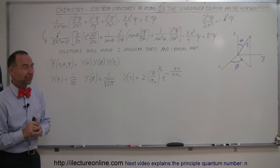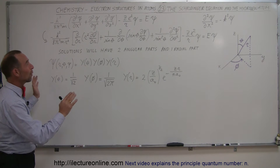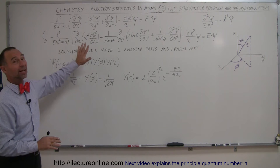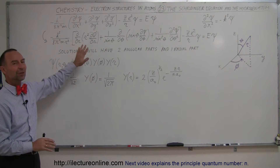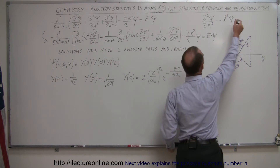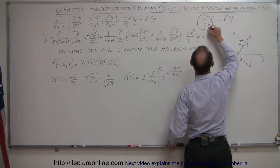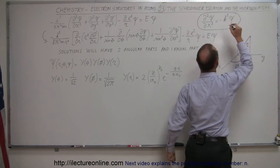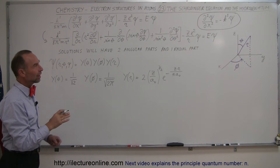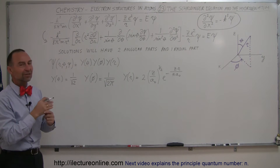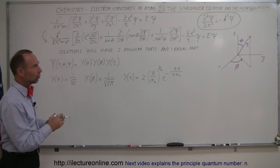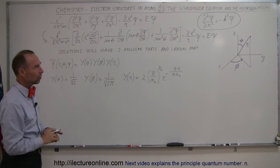Now, before you turn off the video because you look at this and think there's no way you can understand this — don't worry, we're not going to actually work out this equation. That is something for another video at a much more advanced level. But what we do have to realize is that this equation appeared in an earlier video. This was the Schrödinger equation that applied to the existence of an electron in a one-dimensional box.